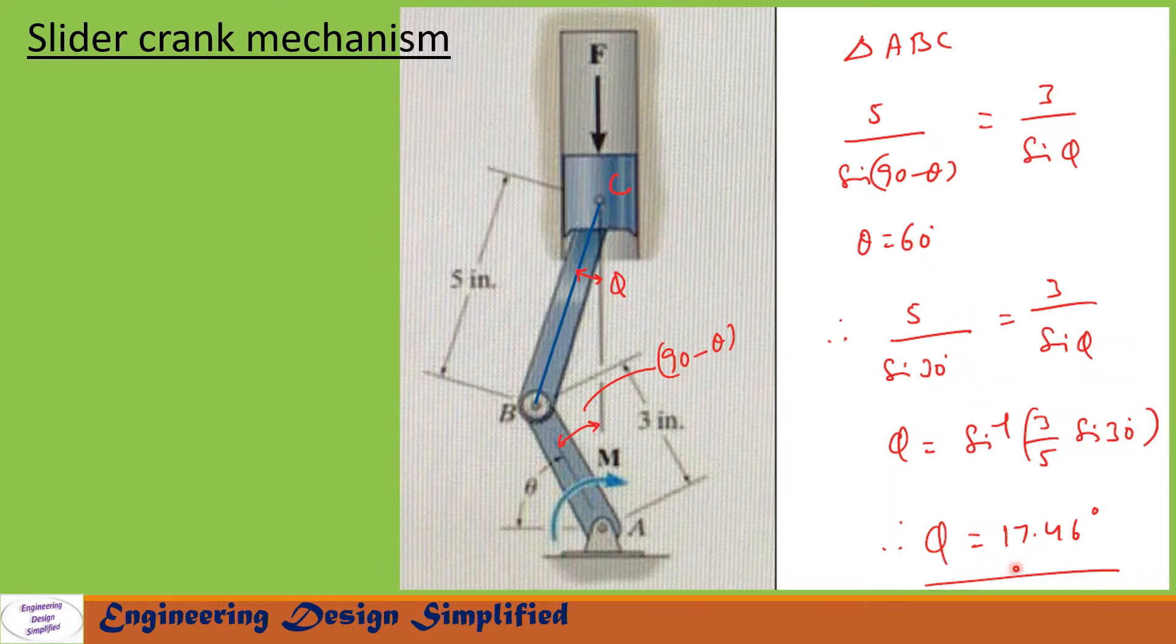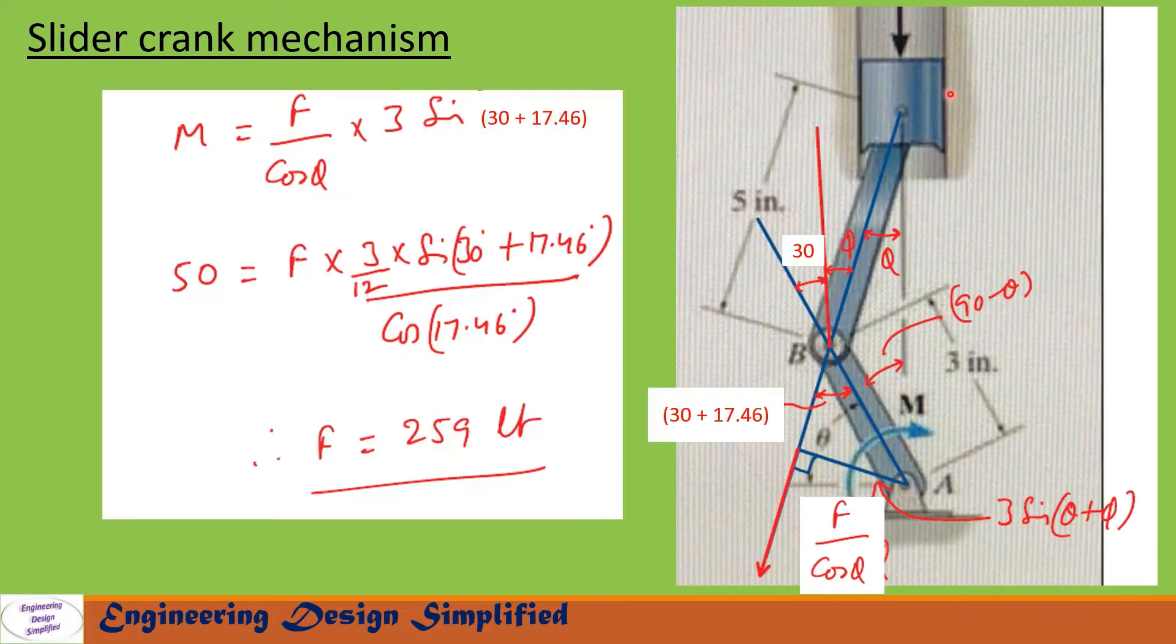There is a force F acting on this piston vertically downwards. The angle between this coupler link and vertical line is phi, so that force F along this coupler link will become F by cos(phi).